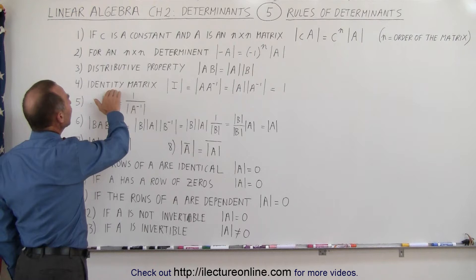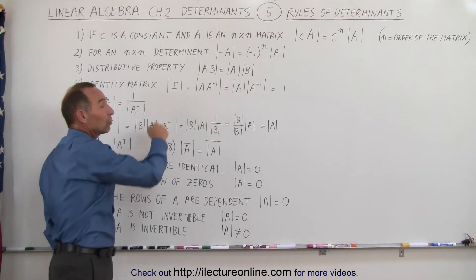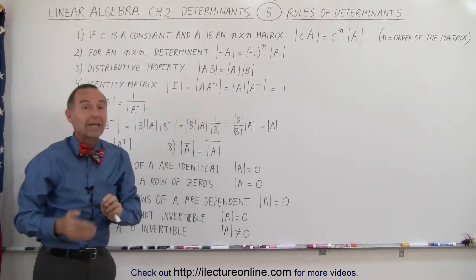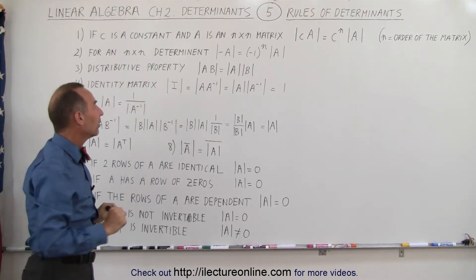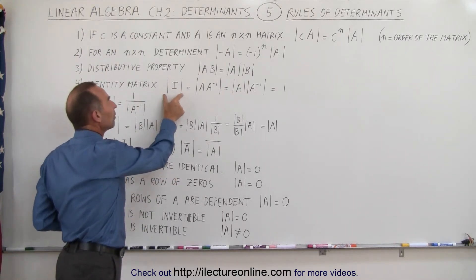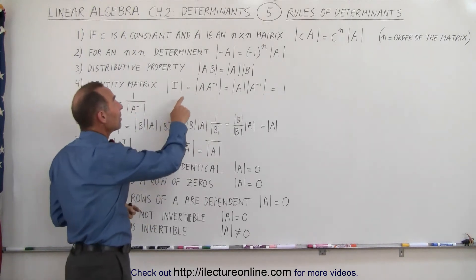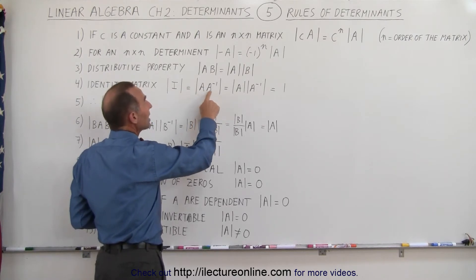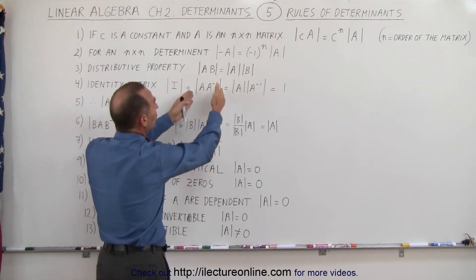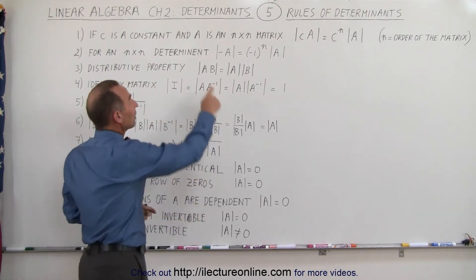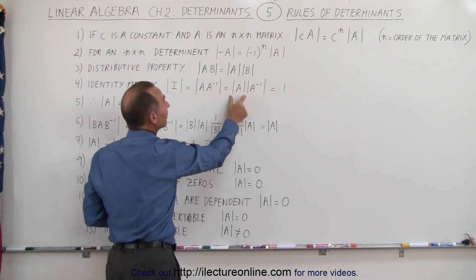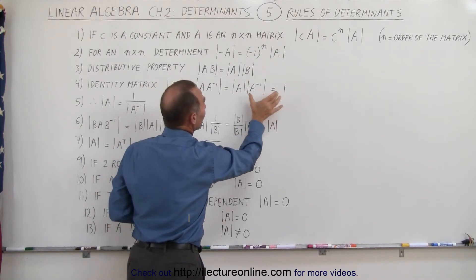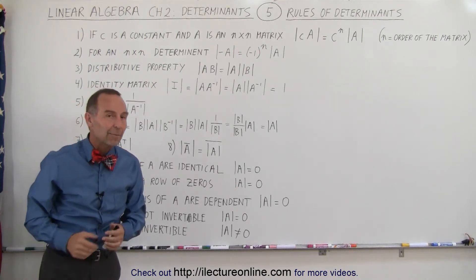The fourth rule is what we call the identity matrix rule. The identity matrix has ones along the diagonal and zeros everywhere else. If we take the determinant of that we get one. We also realize that a matrix A times its inverse gives the identity matrix, and by the previous rule the determinant of that product equals the determinant of A times the determinant of the inverse of A, and that product equals one — the same as the determinant of the identity matrix.